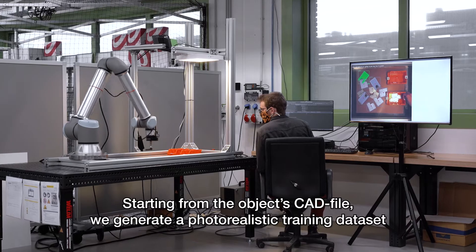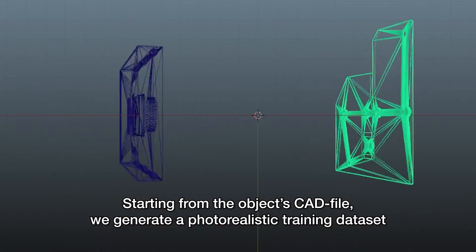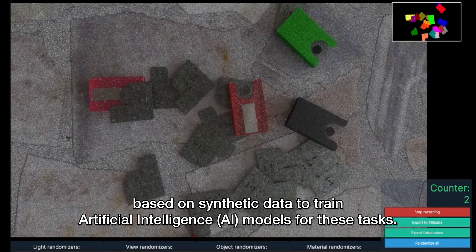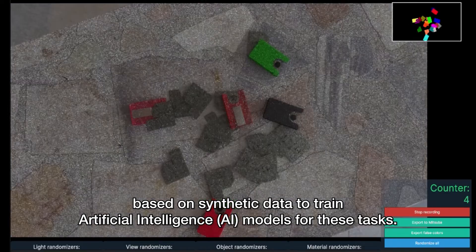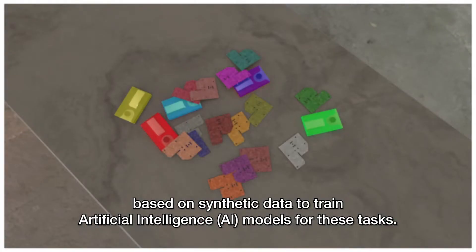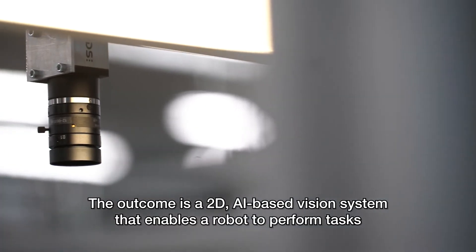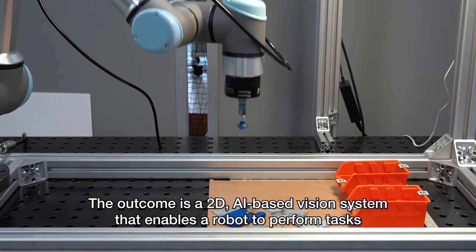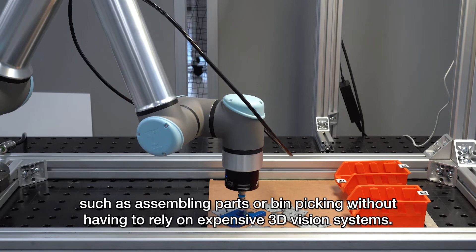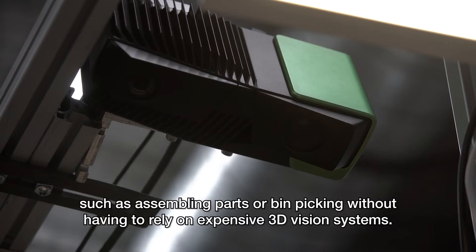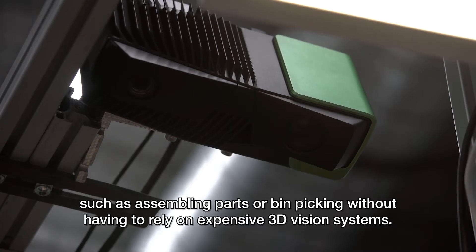Starting from the object's CAD file, we generate a photorealistic training data set based on synthetic data to train artificial intelligence AI models for these tasks. The outcome is a 2D AI-based vision system that enables a robot to perform tasks such as assembling parts or bin picking without having to rely on expensive 3D vision systems.